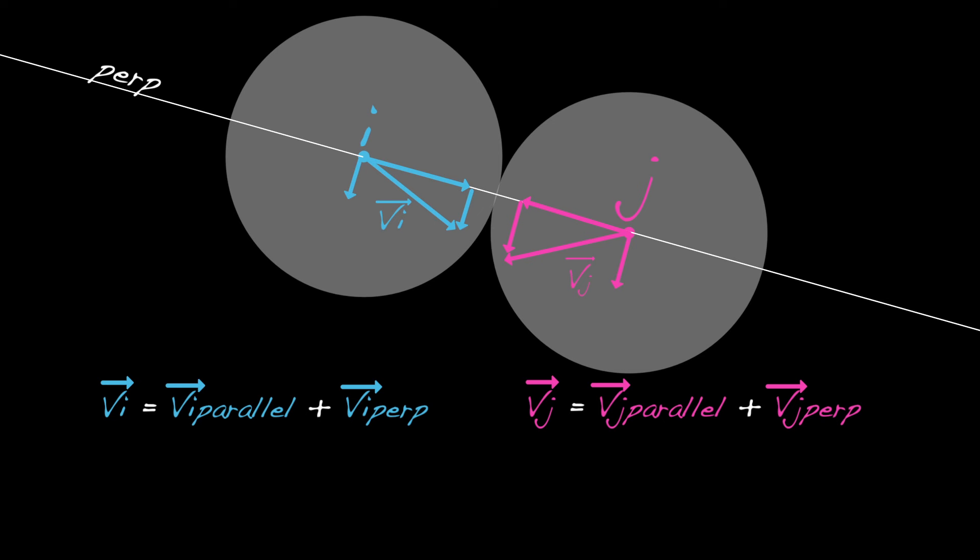That is, they swap perpendicular velocities. That means after the collision, the velocities v prime i and v prime j are given by these equations.